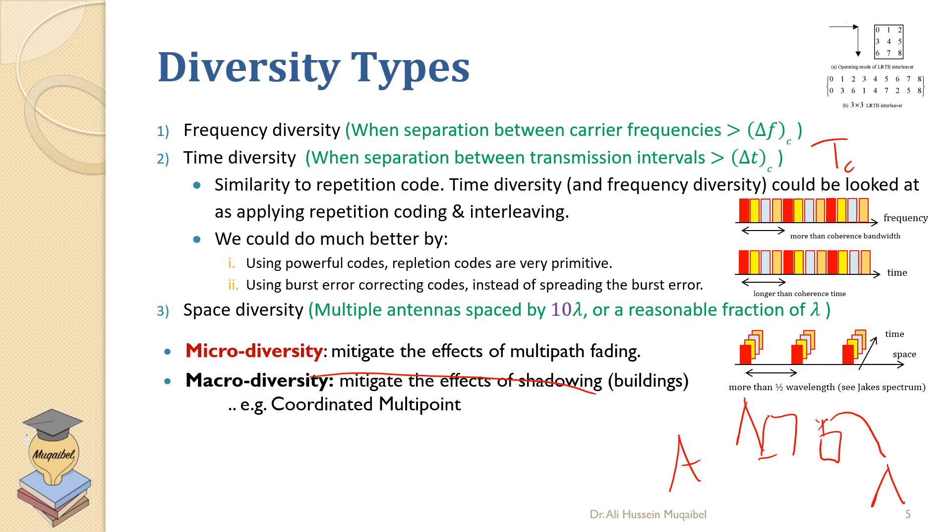That's a different classification of diversity techniques. We have micro diversity where we think about mitigating the multipath—it's micro because we are using small differences. Or we can have macro diversity where we have a big scale and we avoid shadowing and buildings.